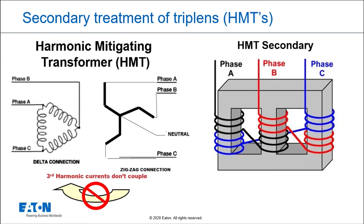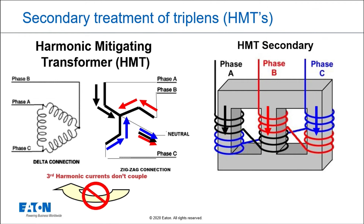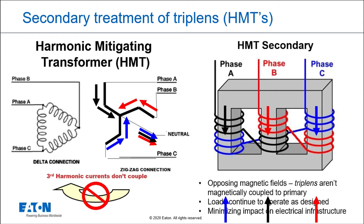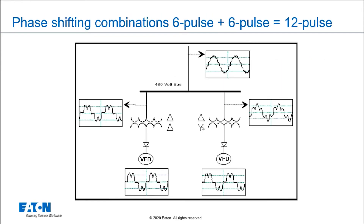If I have an HMT that's a delta-zigzag, it works a little differently. In this case, the third harmonics coming from the load — some of it from phase A and some from phase C, shown by the black and blue arrows — cancel each other out on the secondary winding. The benefit of that is they don't circulate on the primary winding. When you don't have that circulation, you end up with a reduction in current going through the transformer, and therefore the losses are less going through a delta-zigzag transformer.